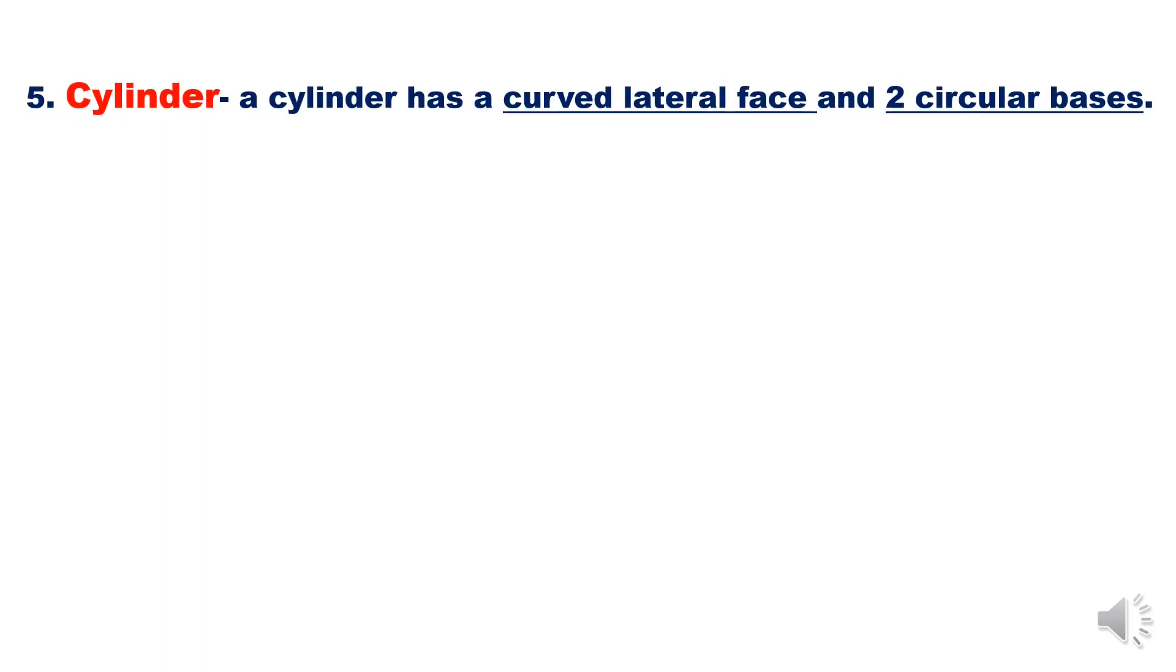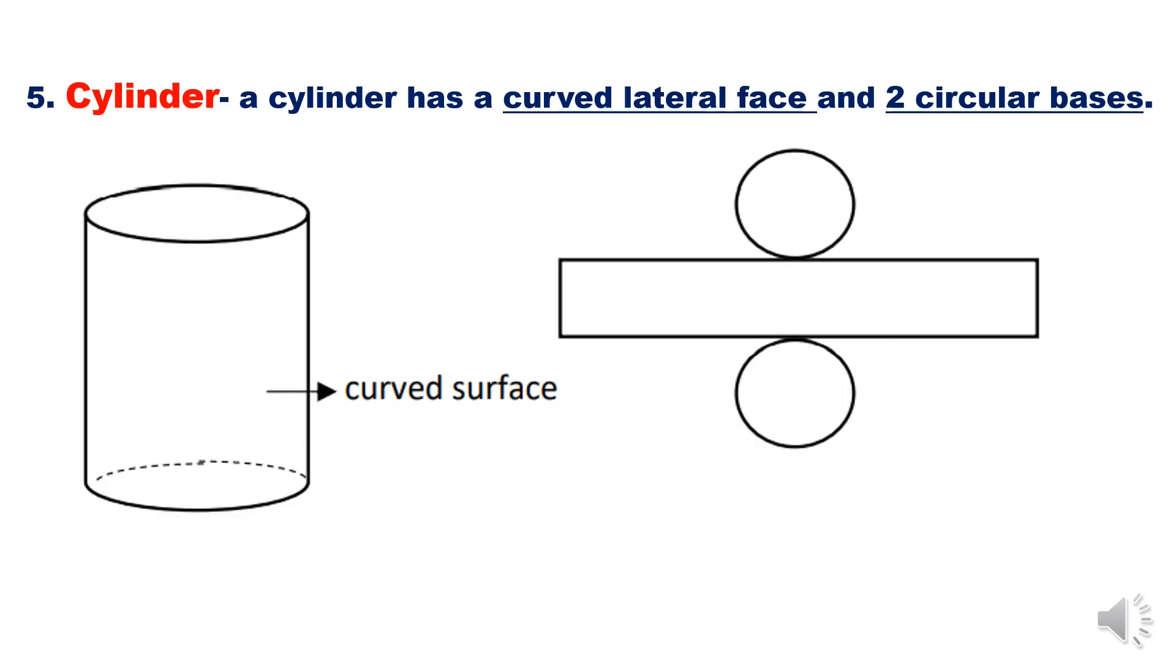Net of a cylinder: a cylinder has a curved lateral face and two circular bases. That is a cylinder and a net. There are two circular bases and one lateral face.